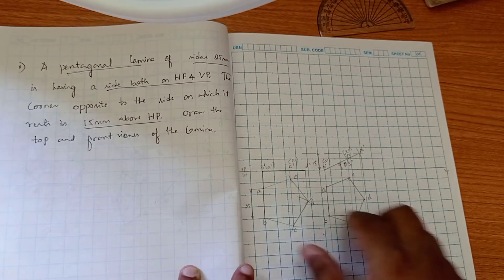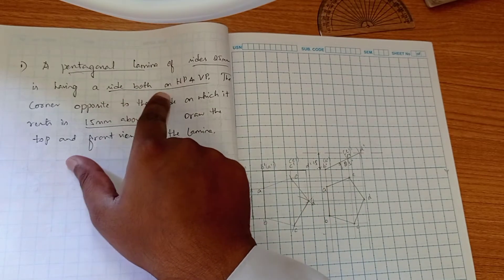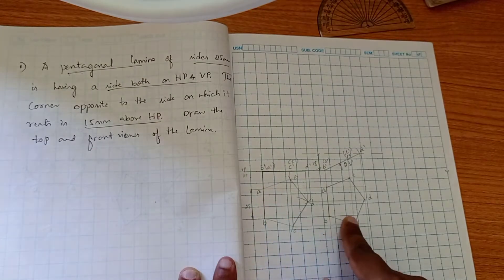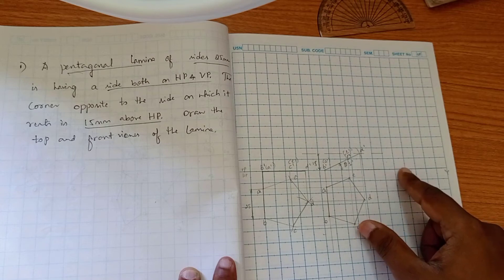Now for the third position, we have to go with this condition: a side has to be there on both HP and VP. The side AB is already there in the HP plane. We have to make sure this AB plane has to be there in VP. How to do that?